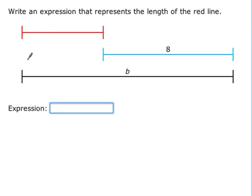When we want to find the length of the red line, we can see that it's really shorter than the black line. So if we take the length of the black line and subtract off the blue one, what would be left will be the red one. So we take B and take away 8, and this will be the length of the red line.